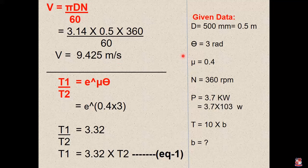Now we have the both value μ and θ. So we have the equation of tension. T1 upon T2 is equal to e raised to μθ. So e raised to 0.4 into 3. So after calculating, we will get the ratio of 3.32.